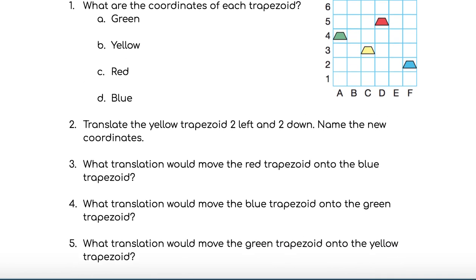Question 5 asks what translation would move the green trapezoid onto the yellow trapezoid? So be sure to describe the translation horizontally and vertically for each of those questions.